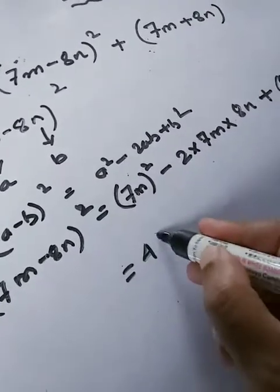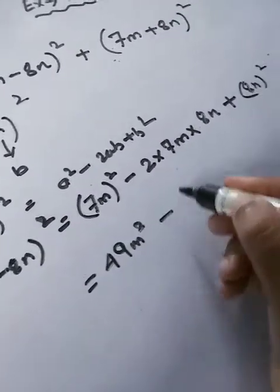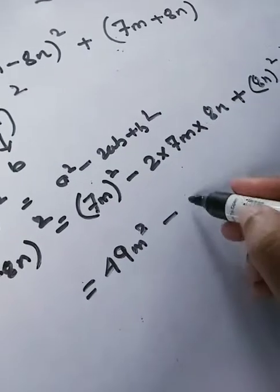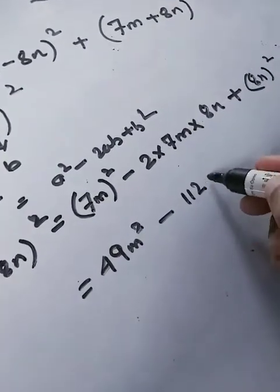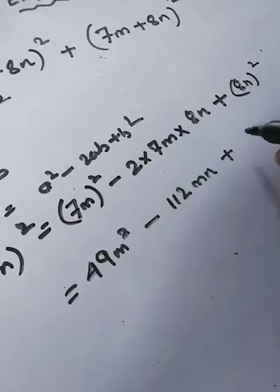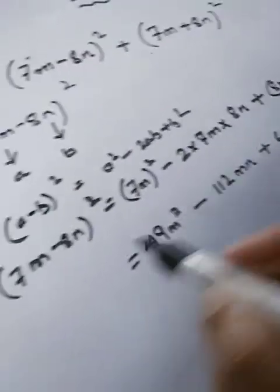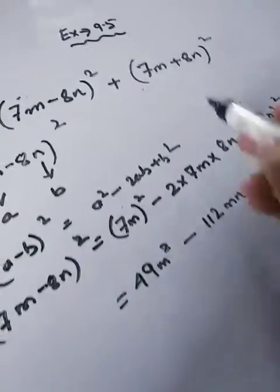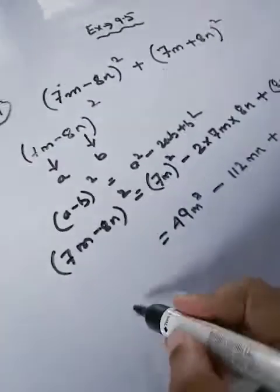The 7m into 7m is 49m square. If you multiply this then the answer would be 112mn, and this would be 64n square. So the solution of 7m minus 8n whole square is this one.